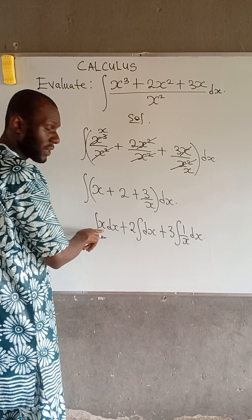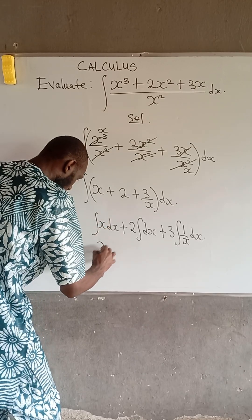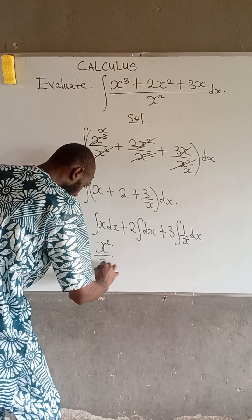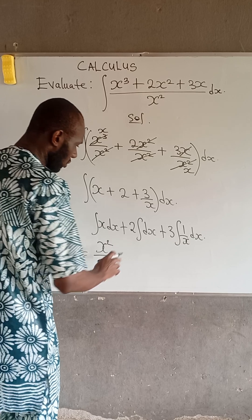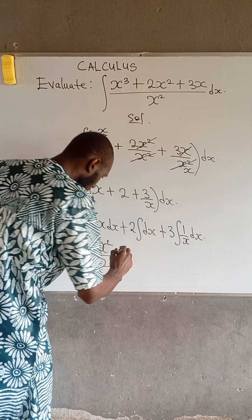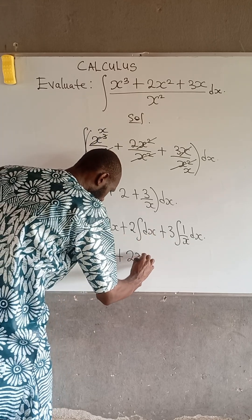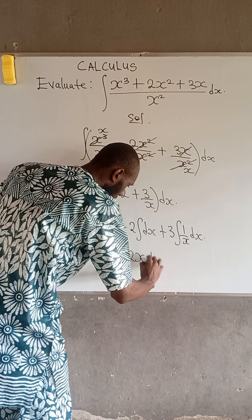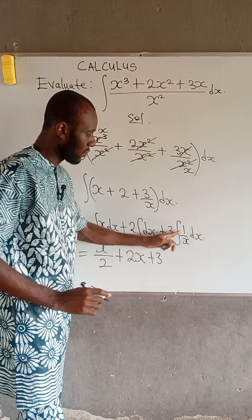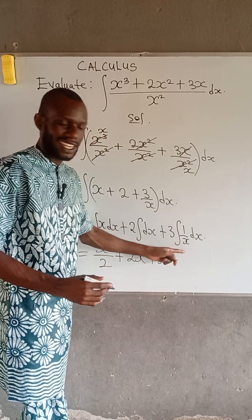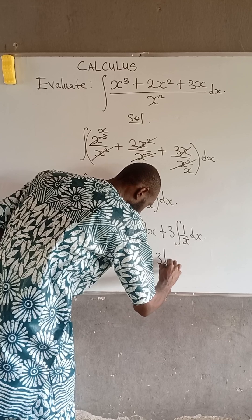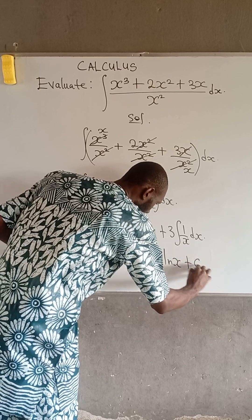So integral of x is giving us x squared divided by 2, and also integral of dx is x. So we have plus 2x, and this becomes plus 3.